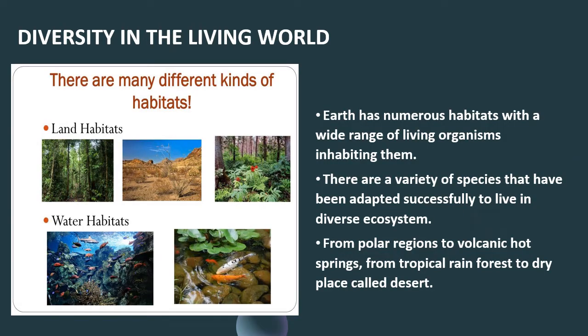Now I am going to explain diversity in the living world. You already know that the earth has numerous habitats with a wide range of living organisms inhabiting them. Habitat means place of living. Land habitats are otherwise known as terrestrial habitat, and water habitats are otherwise known as aquatic habitat. Forest is an example of terrestrial habitat, and sea is an example of aquatic habitat.